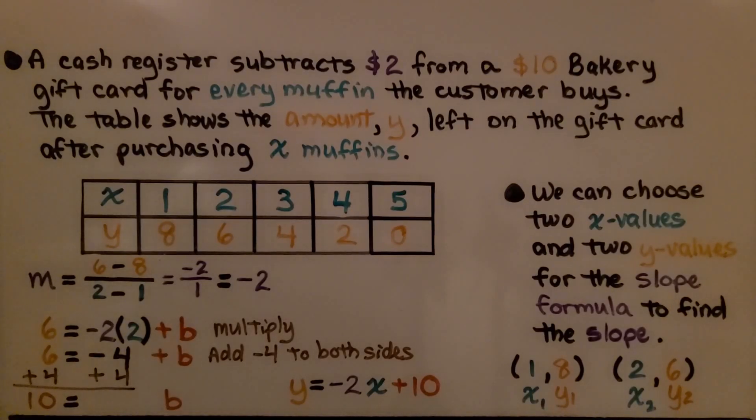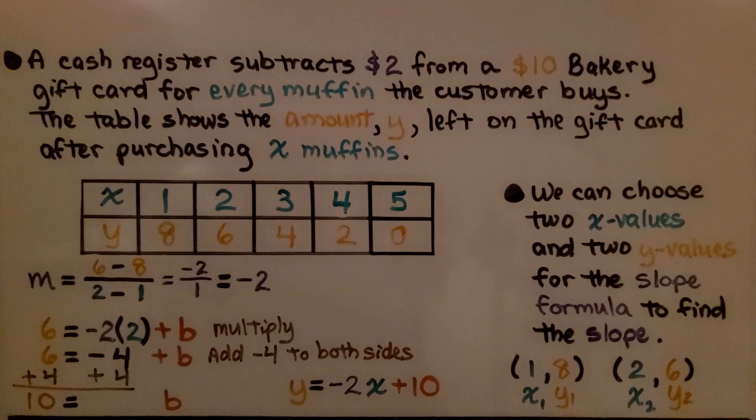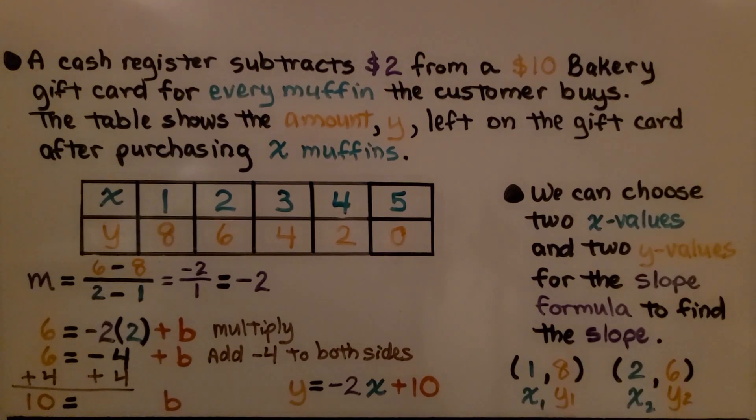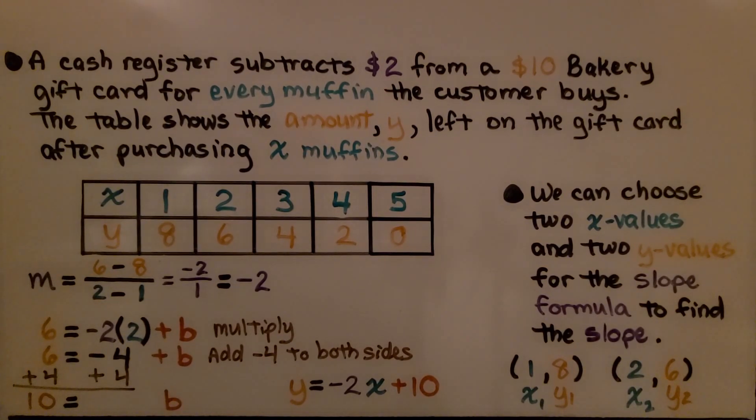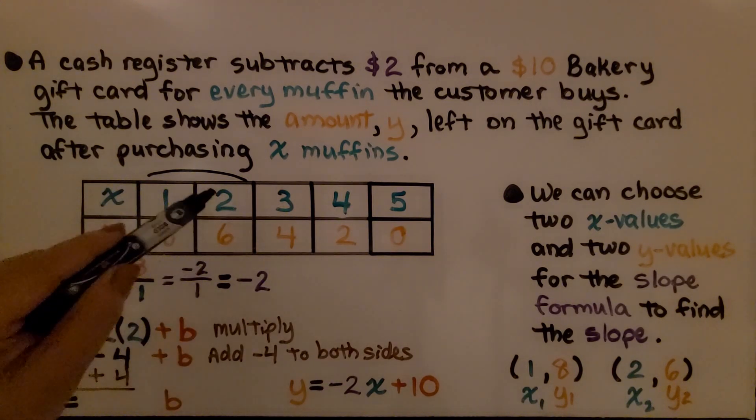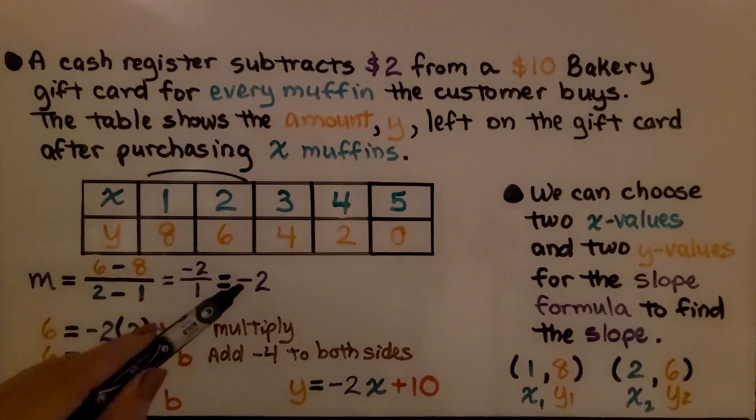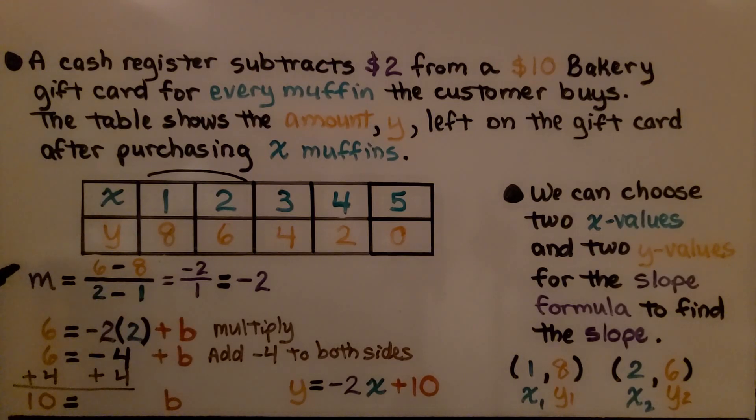We're going to use our bakery gift card problem again to see how to do this. A cash register subtracts $2 from a $10 bakery gift card for every muffin the customer buys. The table shows the amount y left on the gift card after purchasing x muffins. We find the slope first by choosing two ordered pairs. We can choose any of them. We have 6 minus 8 over 2 minus 1, which gives us negative 2 for m, our slope.